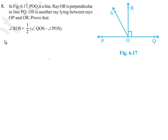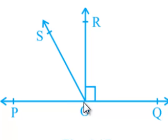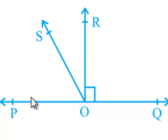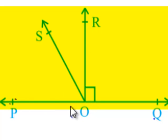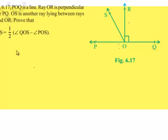Moving to the solution. If we observe the figure, we can say that POQ is a straight line which is intersected by ray OR. Then angle POR and angle QOR form a linear pair.